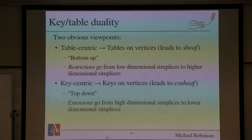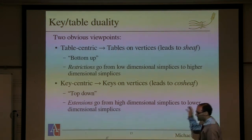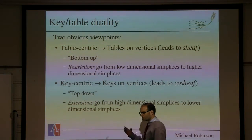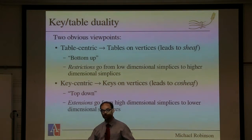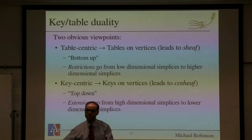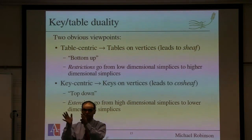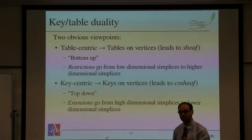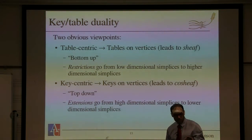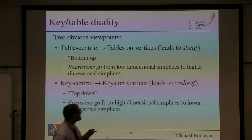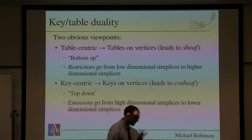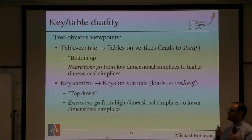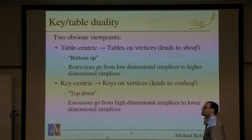This viewpoint has been table-centric, essentially bottom-up. I've got tables on vertices of this simplicial complex — a sensor-centric view where I've got all the data sitting in front of me. When I take from a big table to a sub-table, I'm restricting my attention to the smaller table and comparing it with the one from another table. I could have done this in a completely dual fashion — instead of table-centric, I could be key-centric, in which case the keys are vertices.